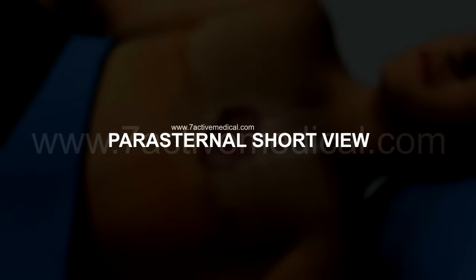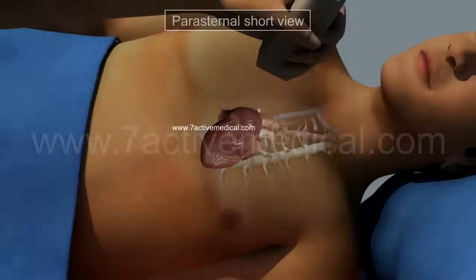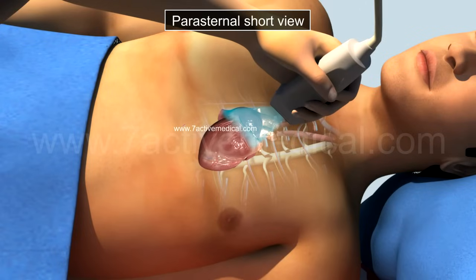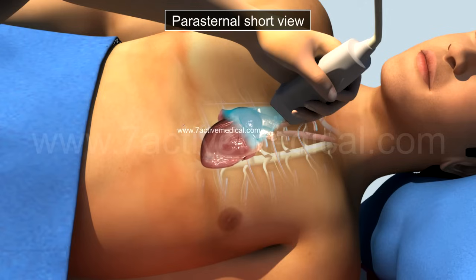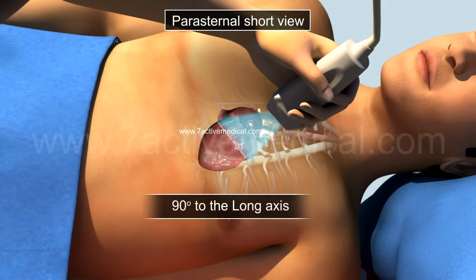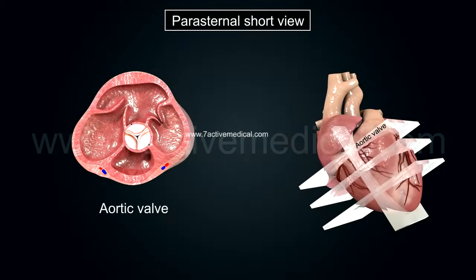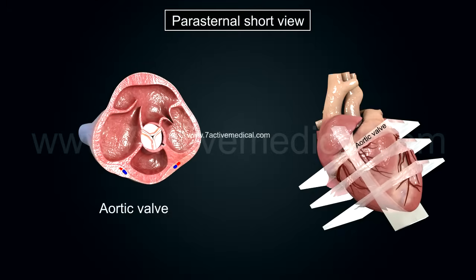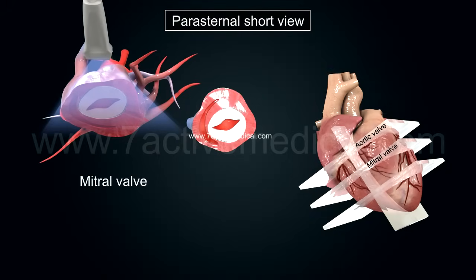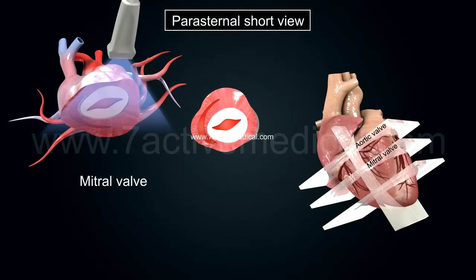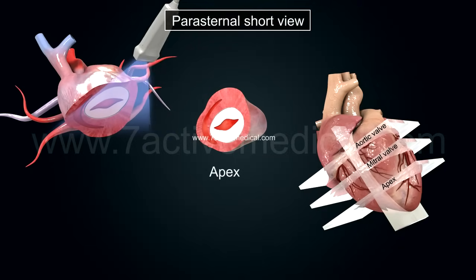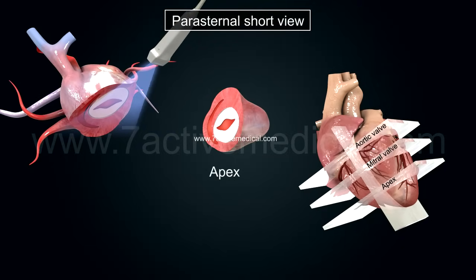2. Parasternal short view is used to estimate right ventricular strain. The probe is positioned by rotating it clockwise 90 degrees to the long axis at three different levels: at the aortic valve, known as the Mercedes-Benz sign; at the mitral valve, known as the fish mouth sign; and at the apex, with the papillary muscles.